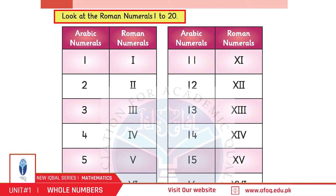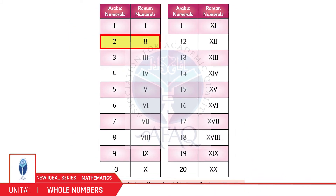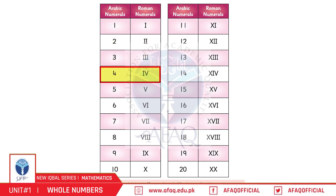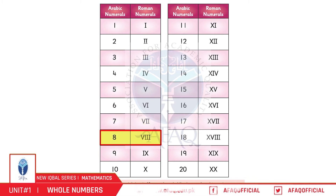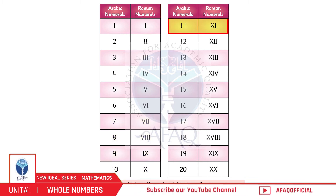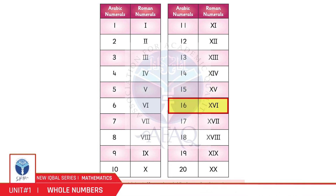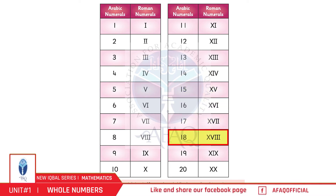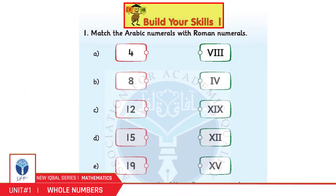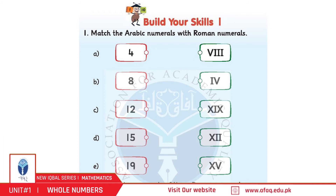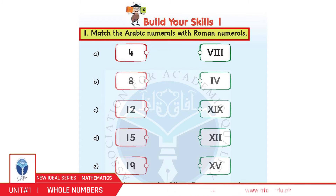Look at the Roman numerals 1 to 20 on page 3: 1, 2, 3, 4, 5, 6, 7, 8, 9, 10, 11, 12, 13, 14, 15, 16, 17, 18, 19, and 20. Build Your Skills 1, page 4. Question number 1: Match the Arabic numerals with Roman numerals.